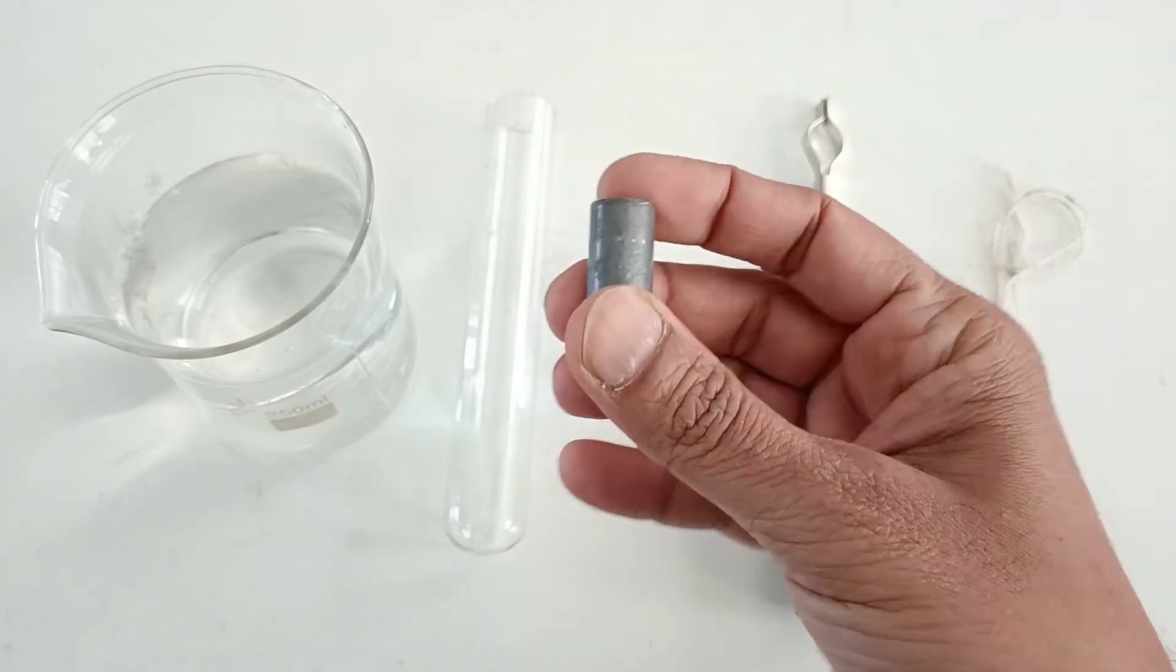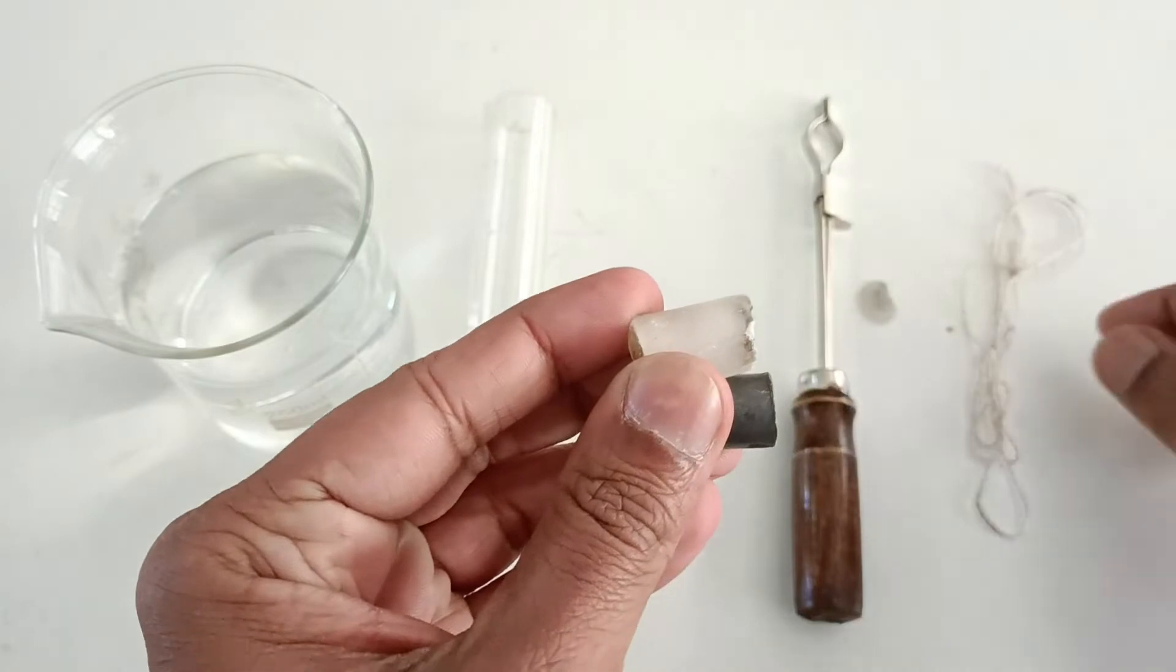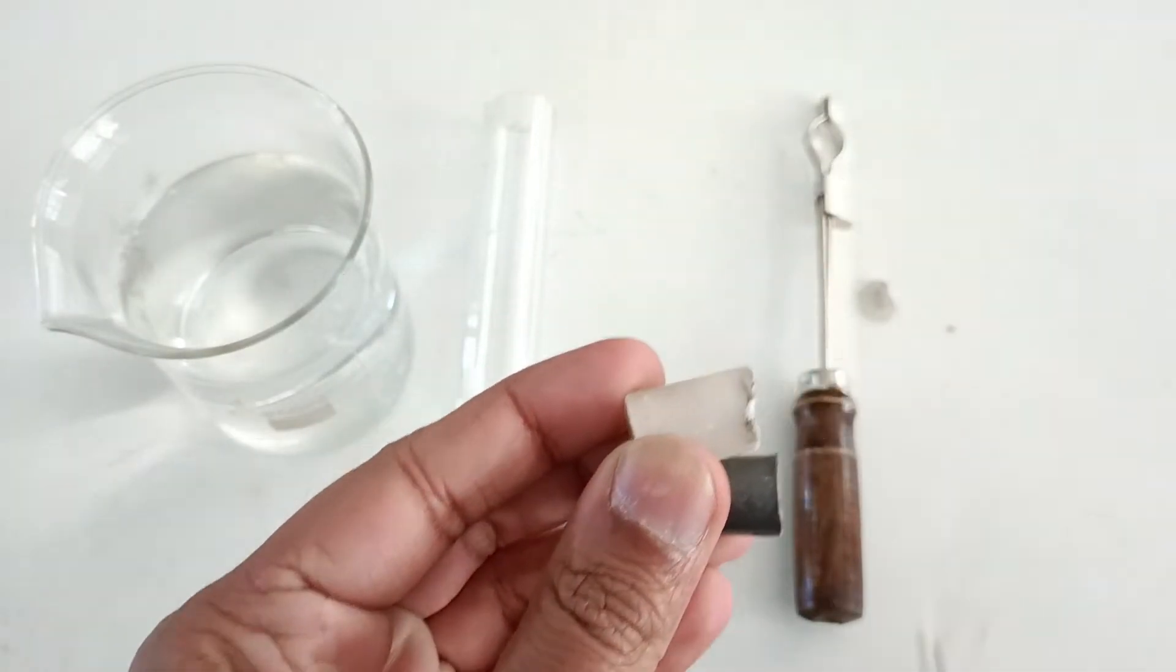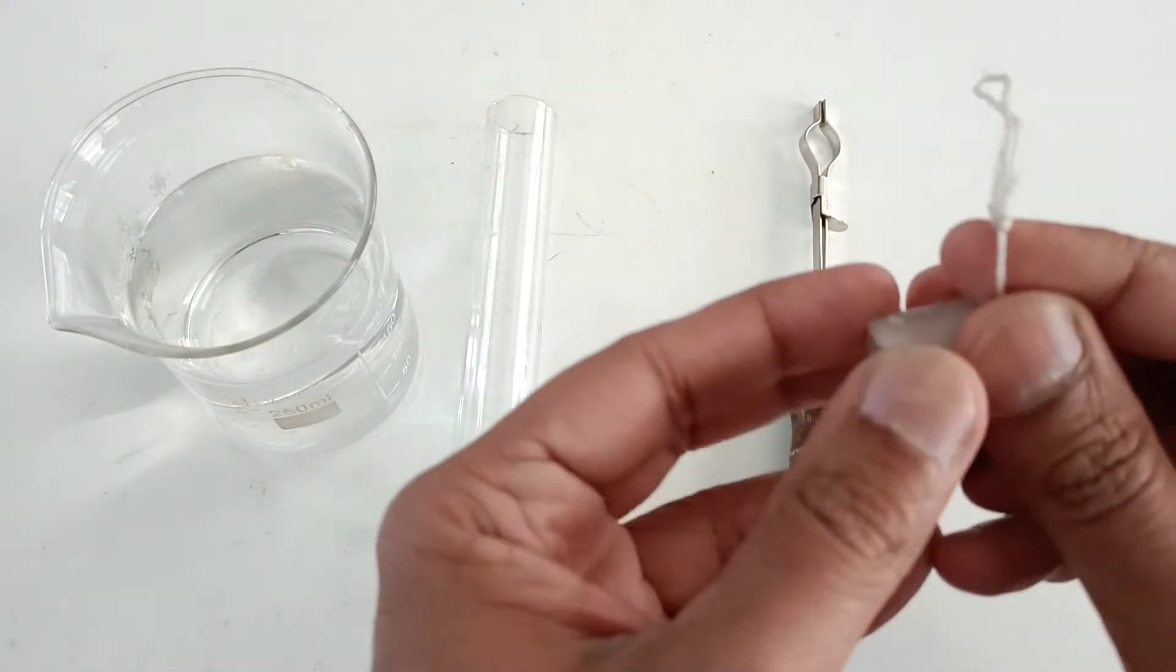This is a small metal cylinder which has to be tied with a small piece of candle. As candle floats on water, and in this experiment we need to sink the candle at the bottom of the test tube.